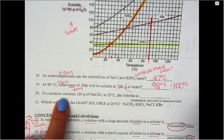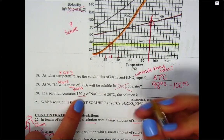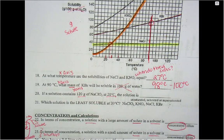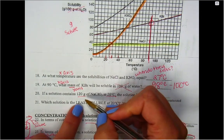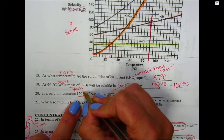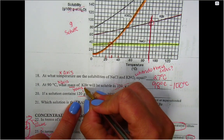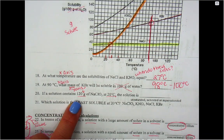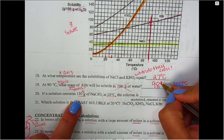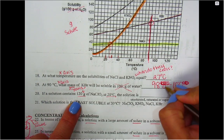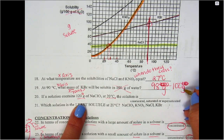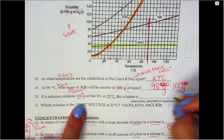All right, number 20. It says if a solution contains 120 grams at 20 degrees Celsius, so I'm giving you two pieces of information, so make sure you're paying attention which one is which. 120 grams, that's my y-axis. Because I messed up, you're right, sorry, thank you. That was a good catch.